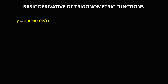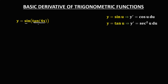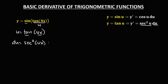For the final given, the derivative of sine is cos(u) and the derivative of tangent is sec²(u). For this given, u is equal to tan(4x). For the derivative of u — since the derivative of tangent is sec²(u) — we have sec²(4x) times the derivative of 4x, which is 4. So du = 4·sec²(4x).